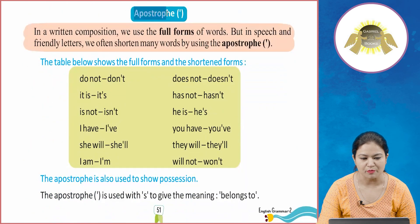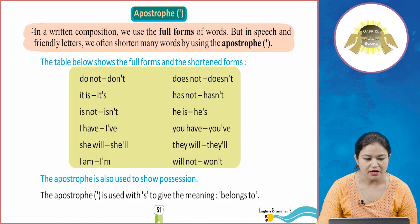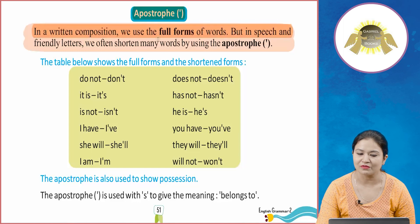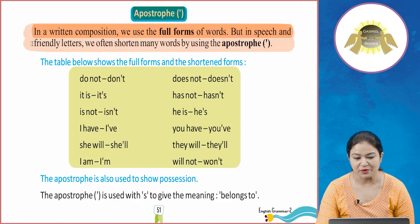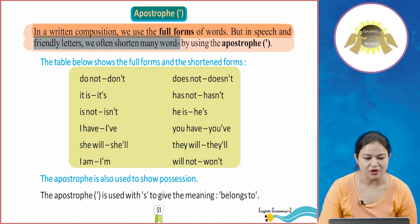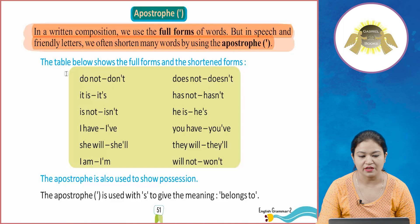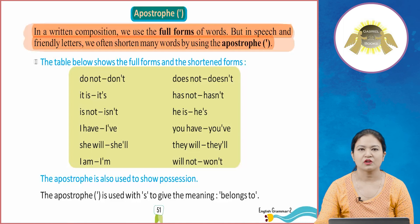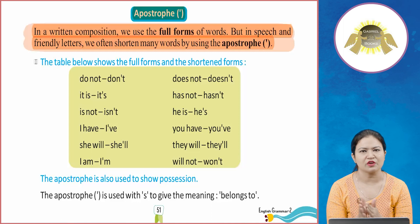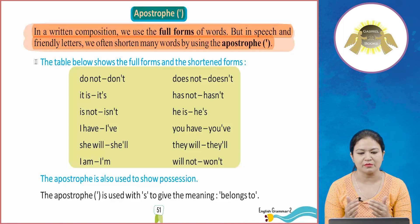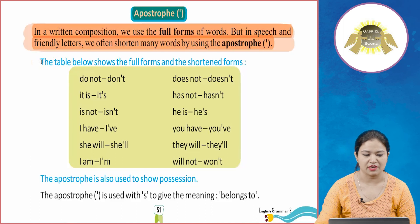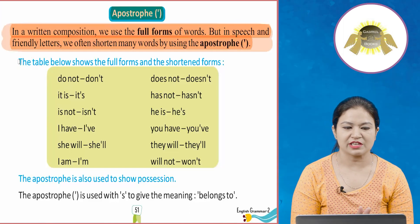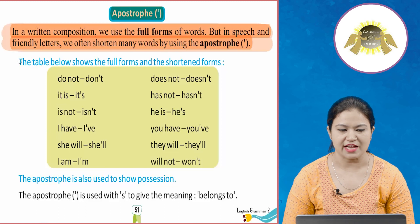Now we will learn about the apostrophe. In written composition we use the full form of words, but in speech and friendly letters we often shorten many words by using an apostrophe. We use the apostrophe to show that some letters have been removed from the word. Let's understand this with examples — where and how do we use it?